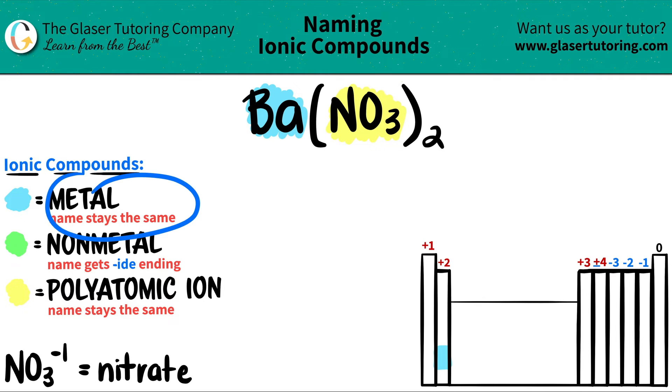Let's name it. The metal name always stays exactly the same. So barium would just be barium. And now I have the polyatomic and polyatomic names always stay the same. So if it was nitrate before, it's nitrate now.